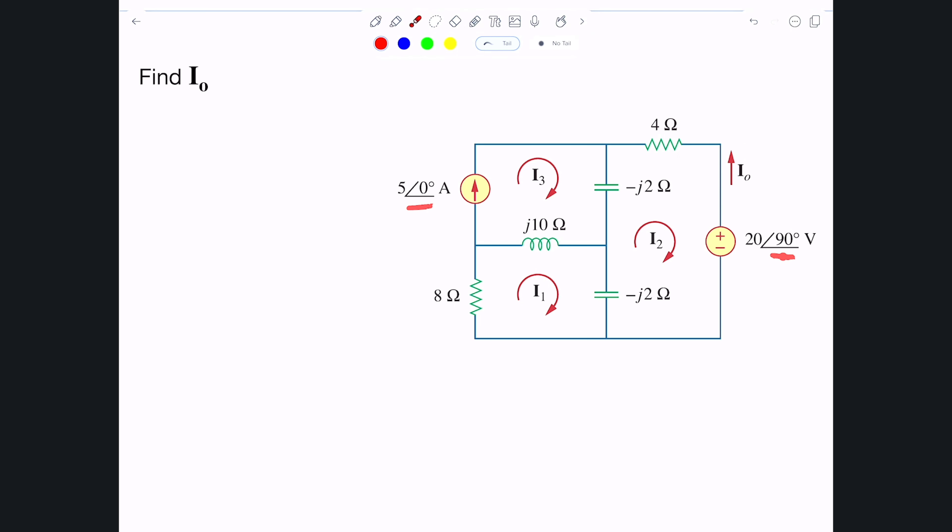They're sinusoids with the same exact frequency, just a different phase. Specifically you can see that this is zero, this is 90 degrees, so they're 90 degrees off with v being ahead of i, basically leading i.